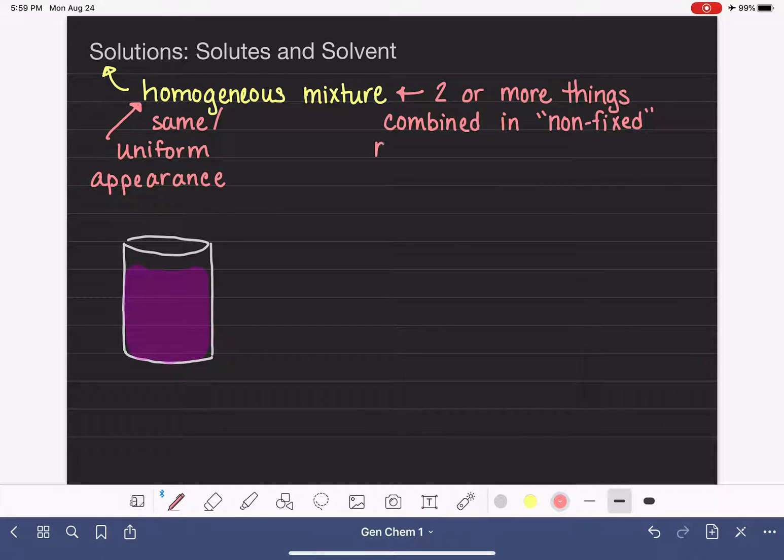A non-fixed ratio just simply means that there are multiple ways that these components can be put together and we would still end up with the same substance. So we can put the ingredients together in more than one way.